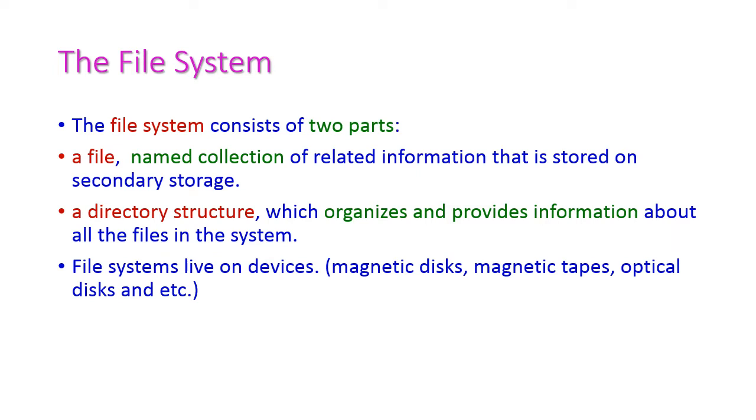The file system consists of two parts. First one is file and second one is directory structure. A file is a named collection of related information that is stored on secondary storage. All the related information will be connected under a common name and this is called a file, and this file will be stored in secondary storage devices, not in the main memory.